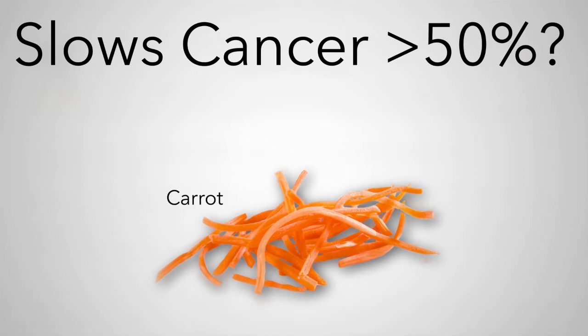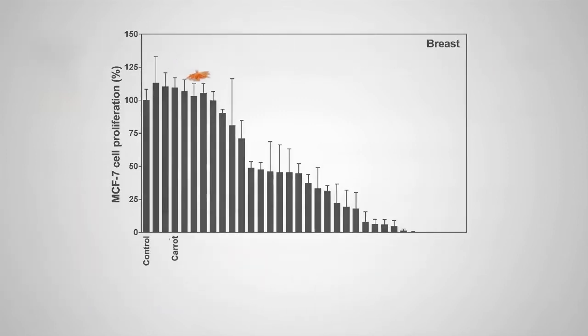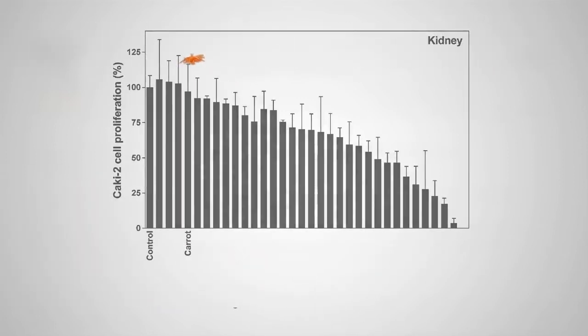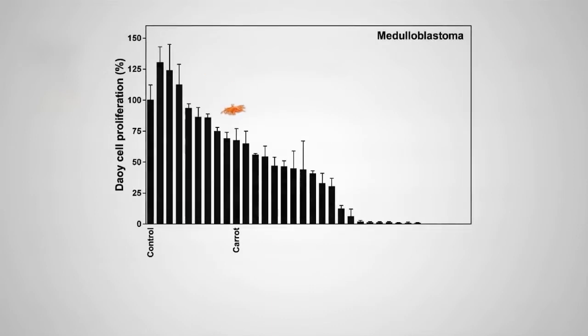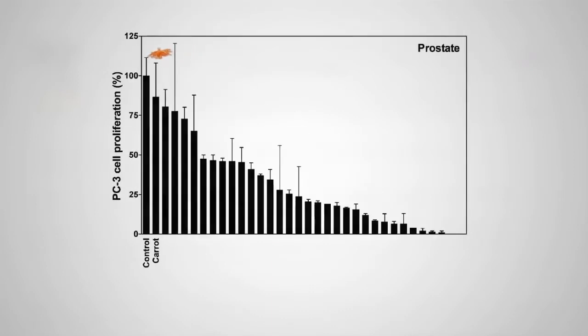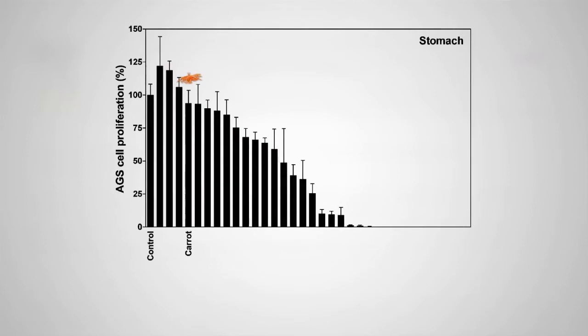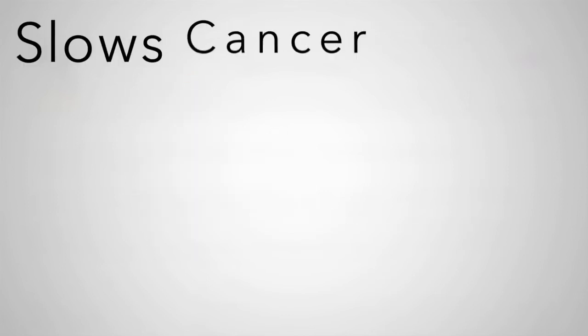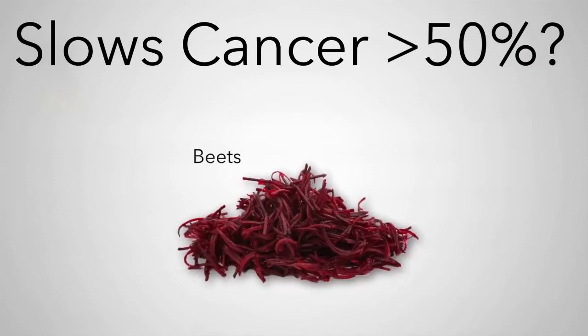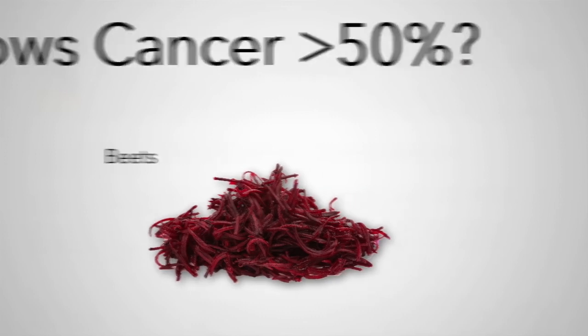What happens if you don't eat vegetables? Without veggies, you are more prone to digestive disorders such as constipation, hemorrhoids, and diverticulosis. Vegetables contain cellulose, which increases stool weight, eases digestion, and reduces transit time.